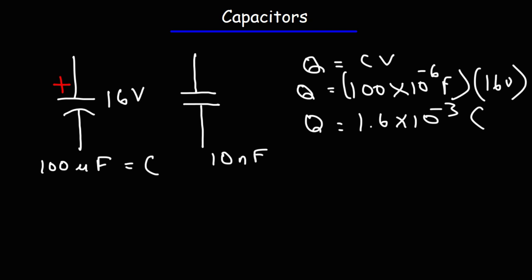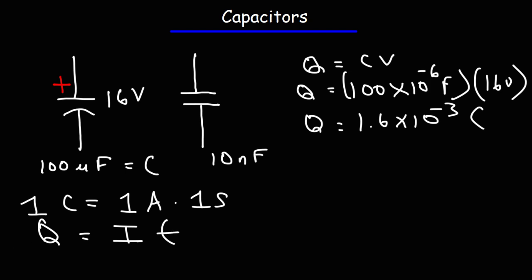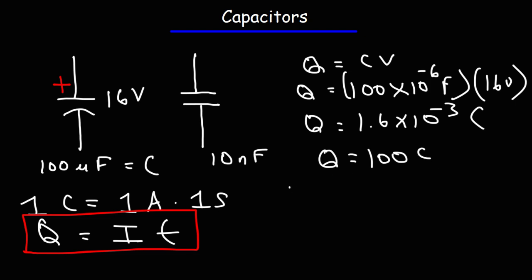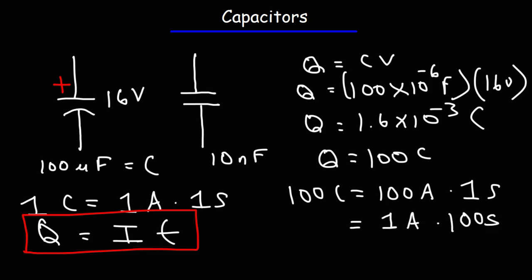A coulomb is a unit of charge. 1 coulomb is equal to a current of 1 amp flowing for 1 second. So we have the formula Q = It. A capacitor with 100 coulombs of charge stored can unleash 100 amps in 1 second, or release 1 amp over 100 seconds, or 10 amps in 10 seconds. Knowing the total charge stored tells you how much current the capacitor can release in a given time period.